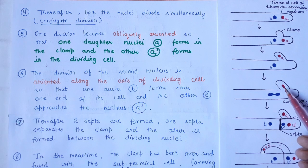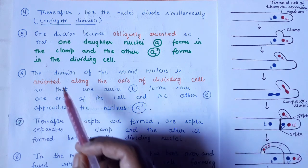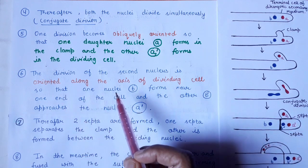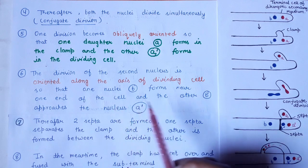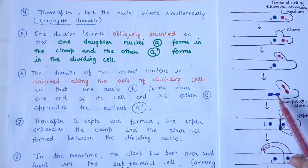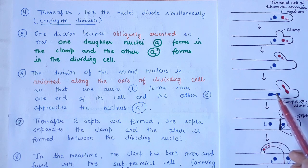The division of the second nucleus is oriented along the axis of the dividing cell. So one nucleus B forms near one end of the cell, and the other nucleus B' approaches nucleus A. As a result we have two cells — one cell carries A' and B, and the other carries A and B'.